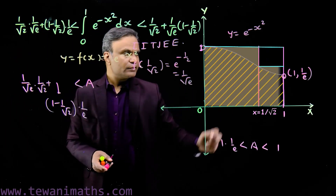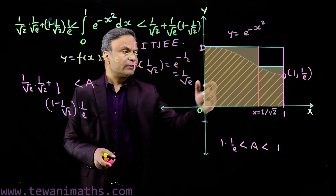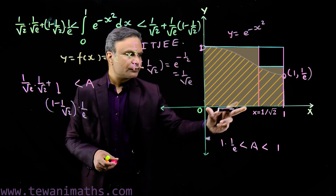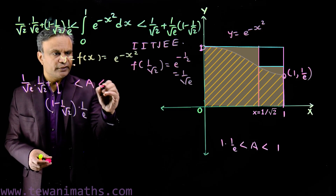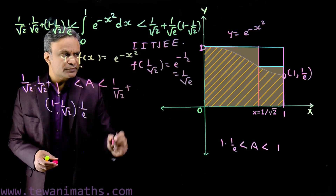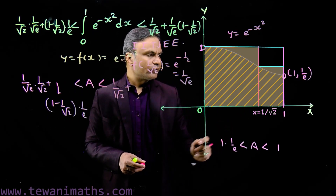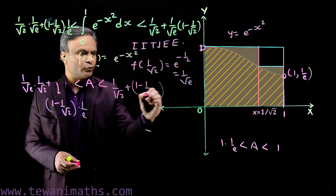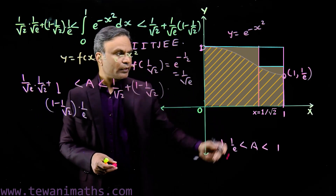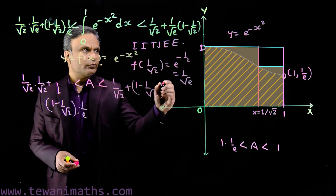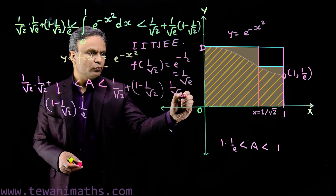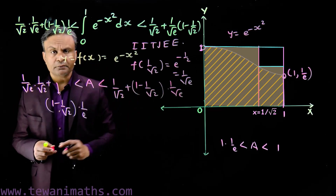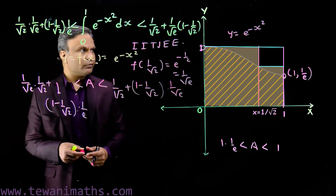Now considering the two upper rectangles: the bigger rectangle has height 1 and width 1/√2, giving area 1/√2. The smaller rectangle has width (1 - 1/√2) and height f(1/√2) = 1/√e. So the upper sum is 1/√2 + (1 - 1/√2)·(1/√e). The area under the curve is less than this upper sum. Thus it is proved that the value of this definite integral lies between the two computed values — this is how we estimate the value of the definite integral of the non-integrable function e^(-x²).